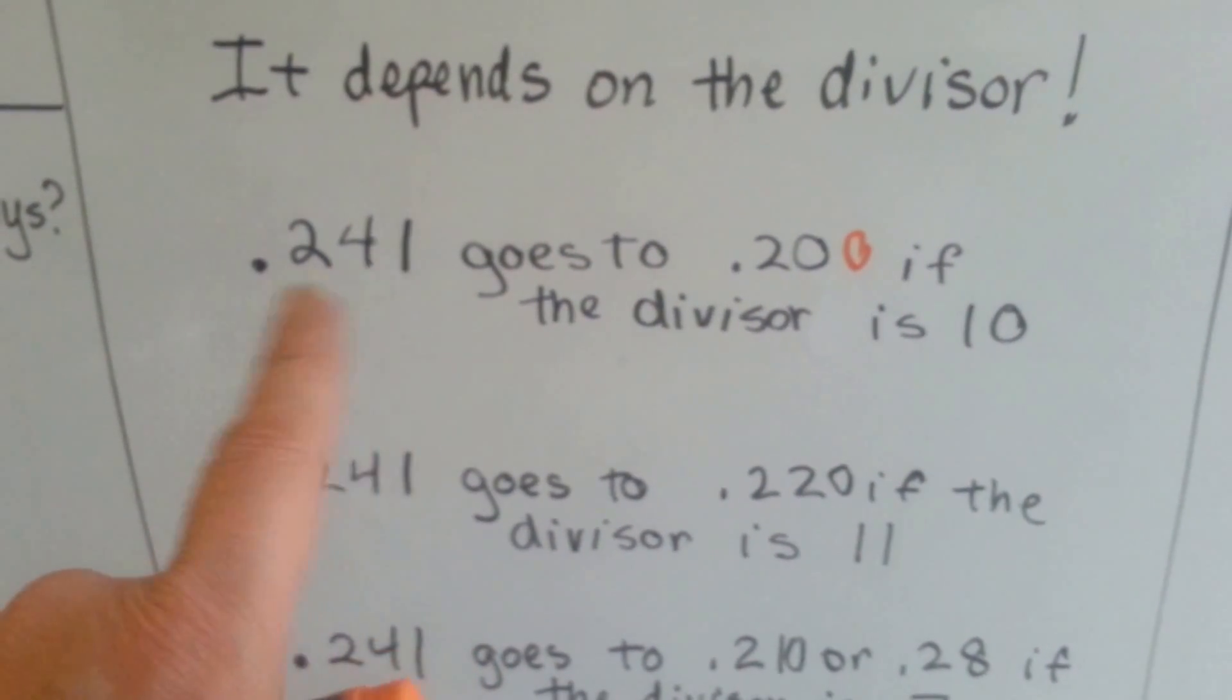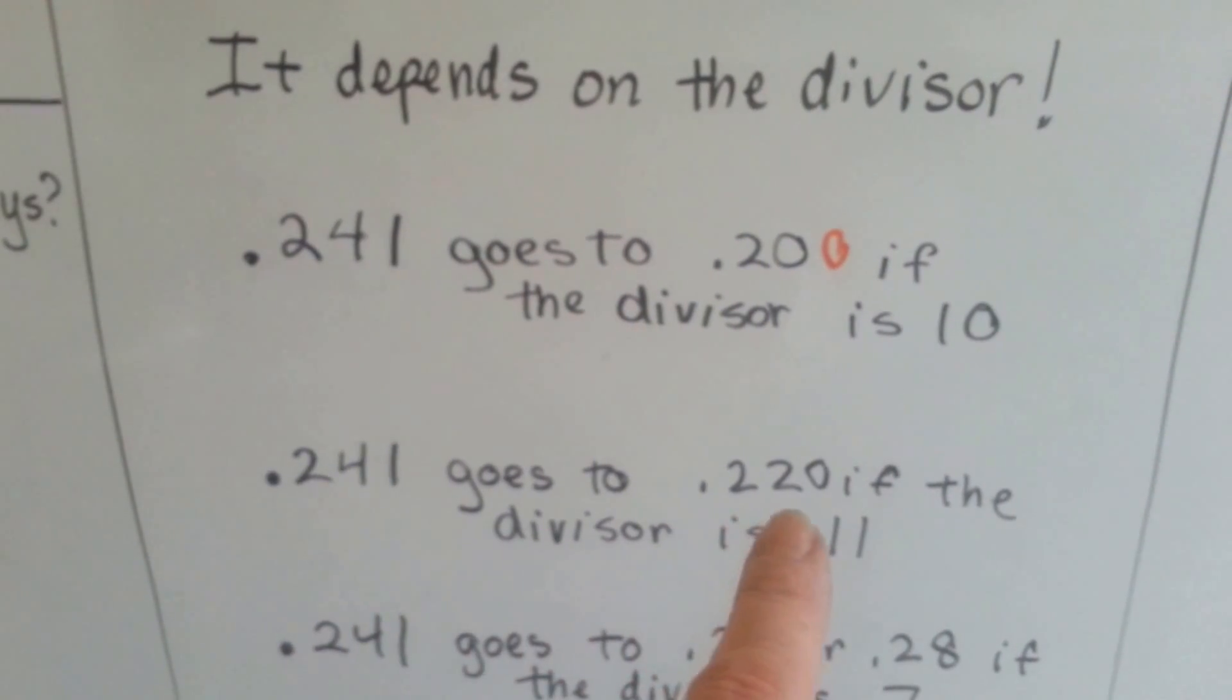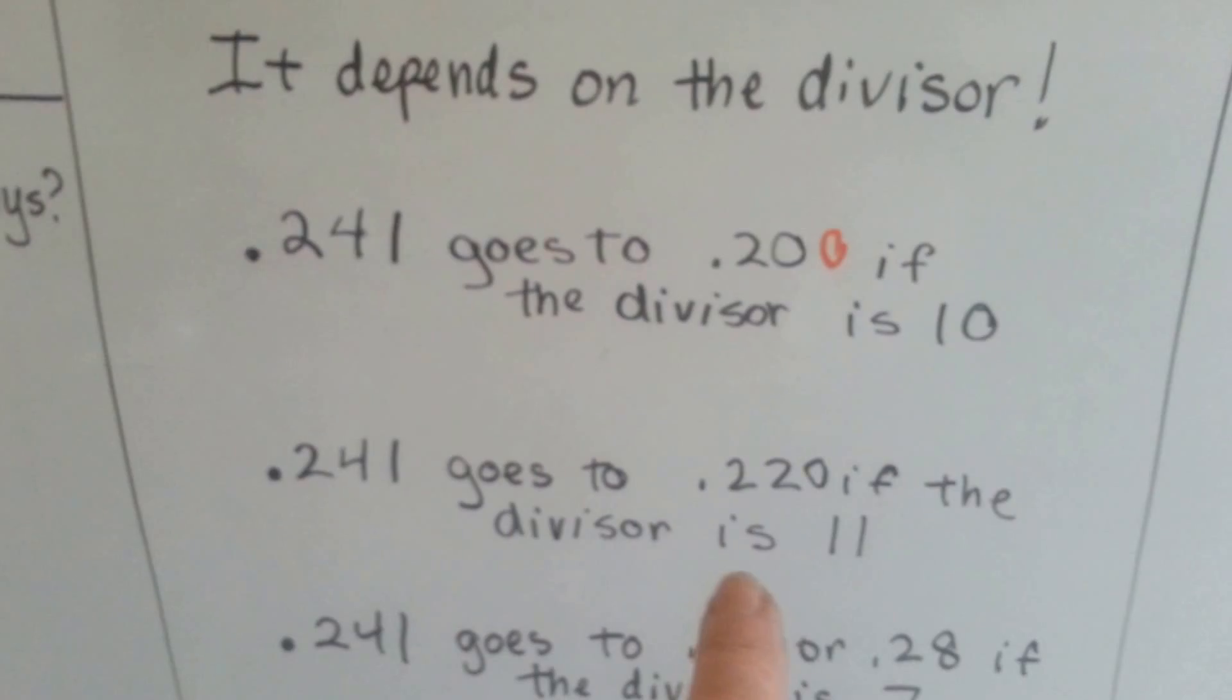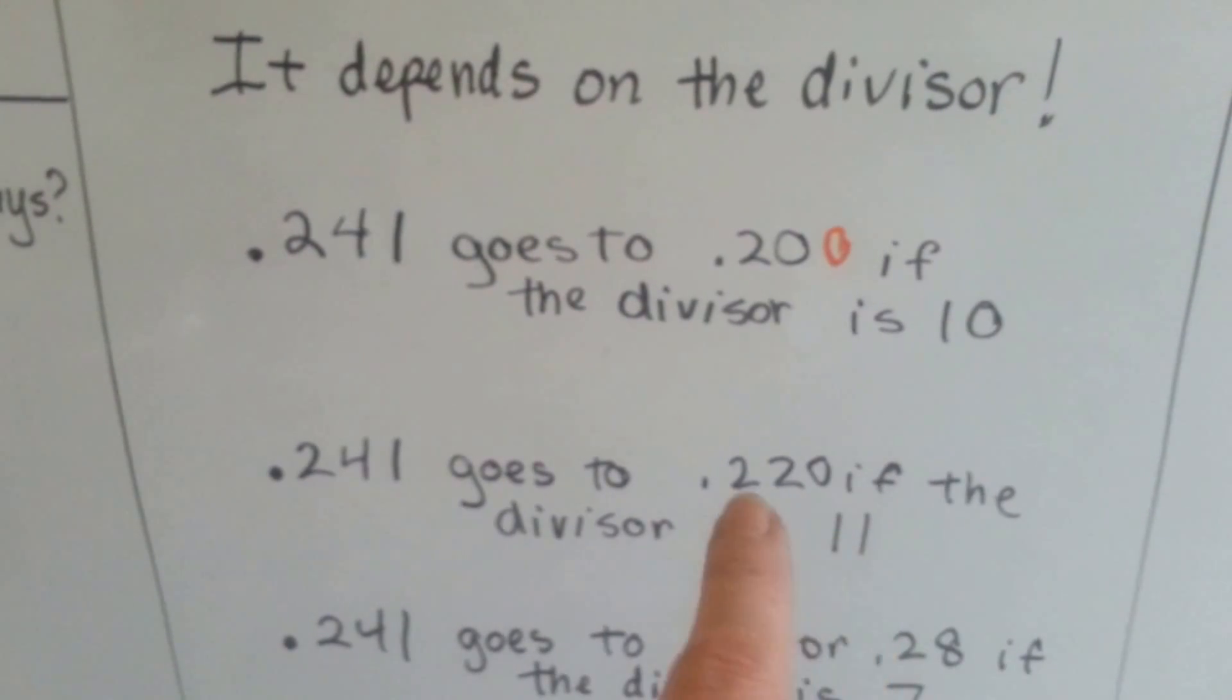We could even go to 240, couldn't we? If it was 241 thousandths, we could round it to 220 if the divisor was 11 because 11 goes into 22.